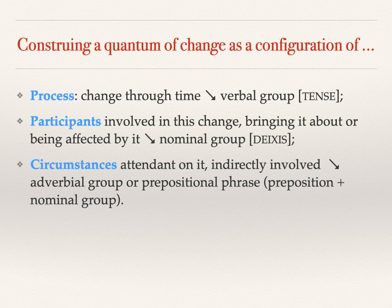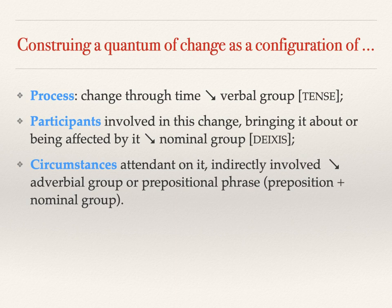The system of DIAXIS allows us to locate the referent of the nominal group as non-identifiable — meaning I'm introducing this for the first time, 'a young grammarian' — or as identifiable and specific: 'this young grammarian,' 'the young grammarian,' 'your young grammarian,' locating it within the space of reference already identifiable to you. This is a nominal analog of the verbal system of tense.